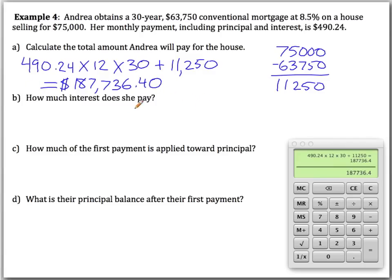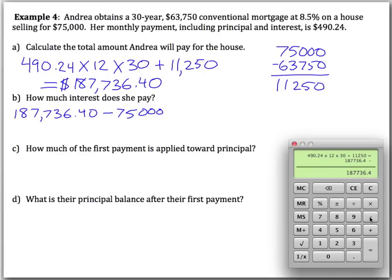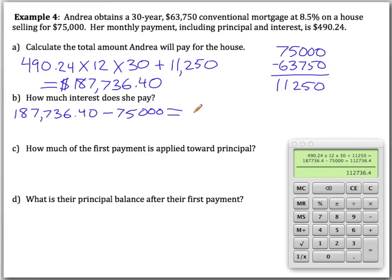To find how much interest she pays, interest is everything she pays over the selling price of the house. We take the total amount paid — $187,736.40 — and subtract the selling price of $75,000. The down payment is included in both figures, so the total amount of interest is $112,736.40.